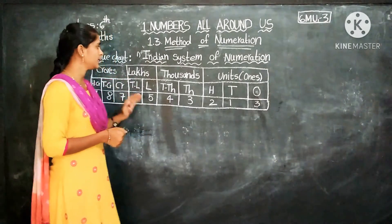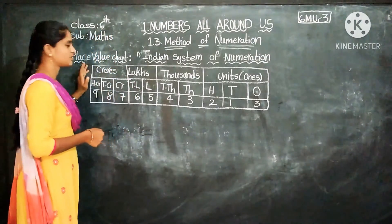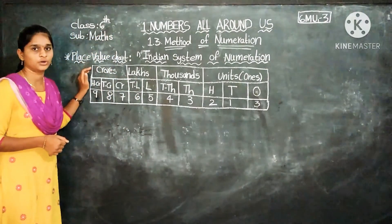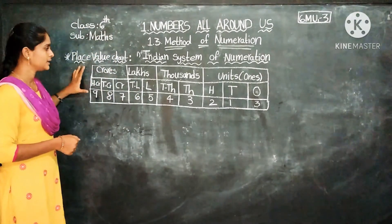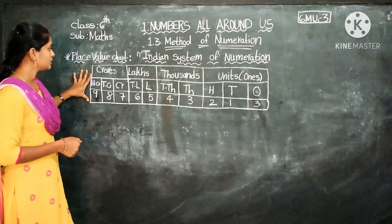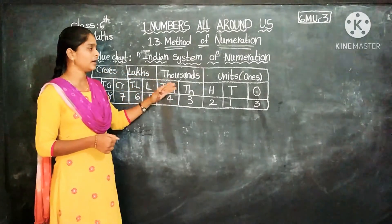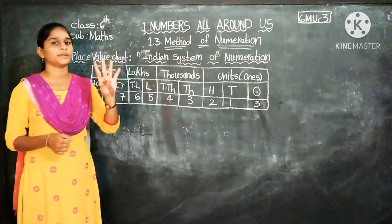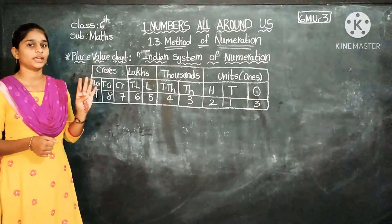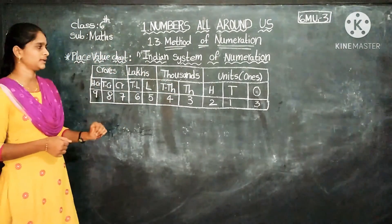I will explain this place value chart. This chart has 4 periods.